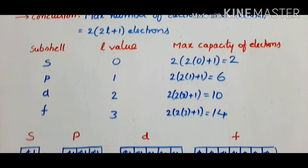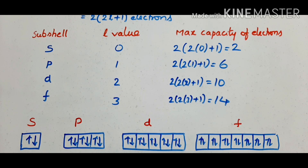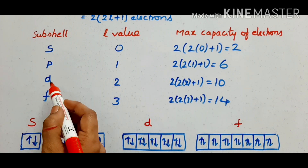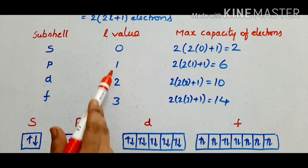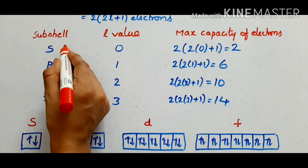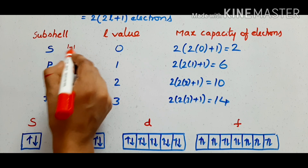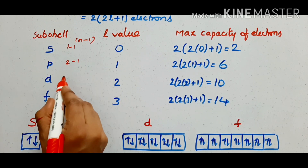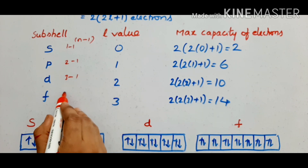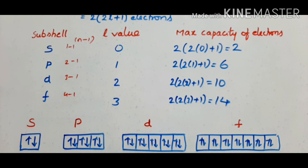The subshell types are s, p, d, f orbitals. For the s subshell, L equals 0; for p, L equals 1; for d, L equals 2; for f, L equals 3. These L values come from the formula L equals n minus 1. So L can take values 0, 1, 2, 3 for different subshells.